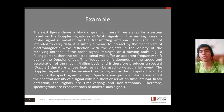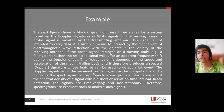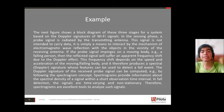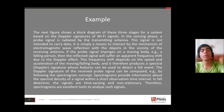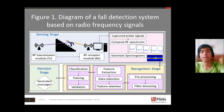The Doppler signature features can be used to detect a fall event. The Doppler signature of the received probe signal can be analyzed using the spectrogram concept. Spectrograms provide information about the spectral density of a signal within a short observation time window. Since the signals are time-varying and non-stationary, spectrograms are excellent tools to analyze such signals.